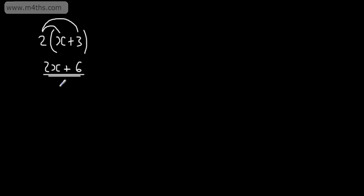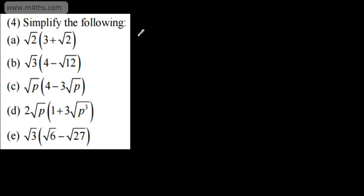We can do exactly the same where surds are involved. The only difference is that we might have to simplify our answer further using the laws of surds. Let's have a look at some examples of where we have single brackets. We're asked to simplify the following — if this was an exam, it might say multiply out and simplify your answer.